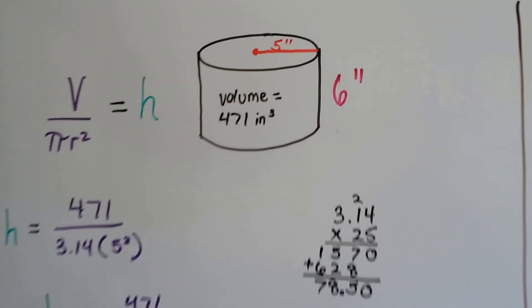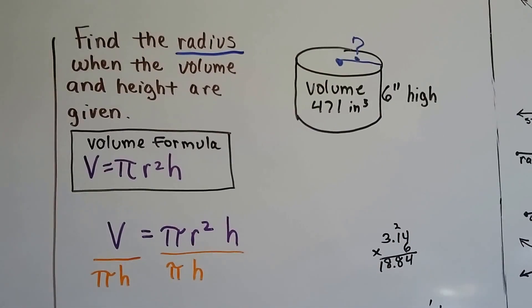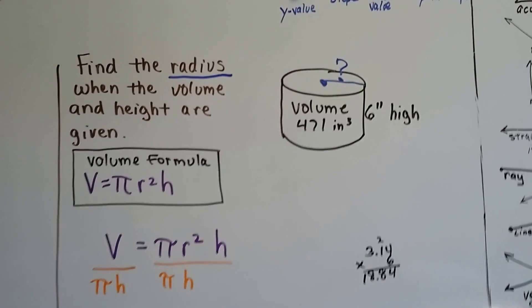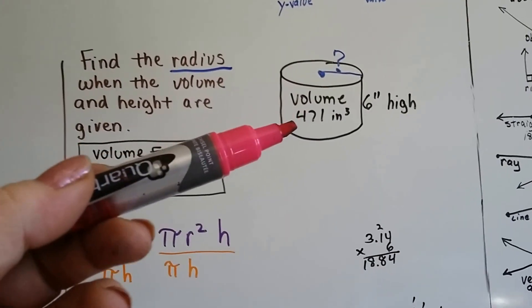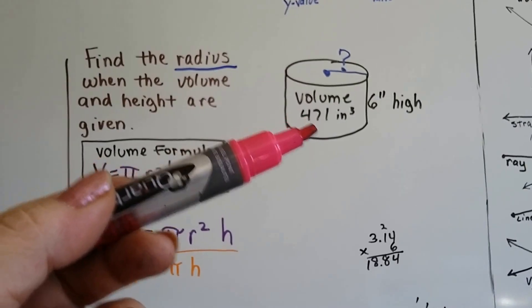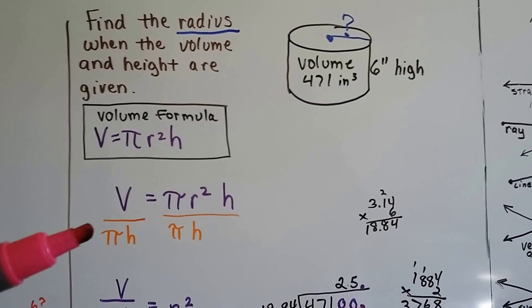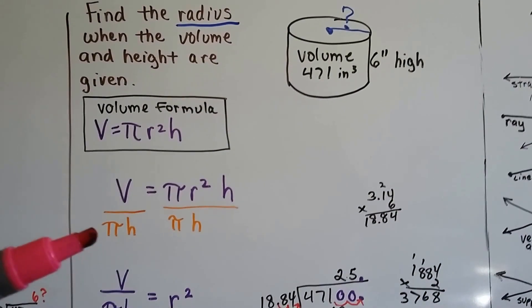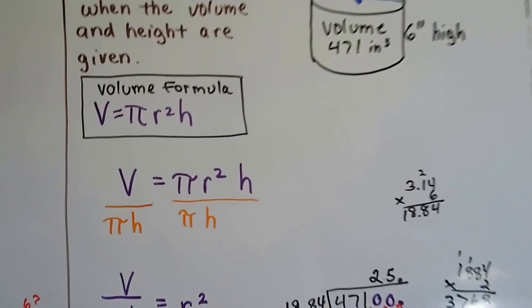Now we can do this to find the radius. I'm going to use the same numbers, but just follow along so you'll see what I'm doing. We can find the radius when the volume and height are given. So if we know the volume is 471 cubic inches and the height is 6 inches, here's our volume formula. What we need to do is get the radius to one side of the equal sign.